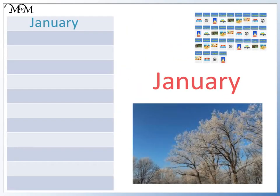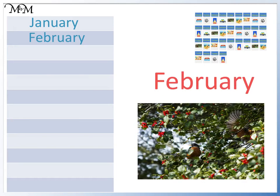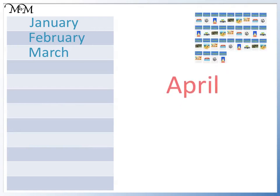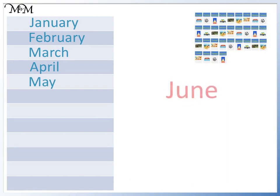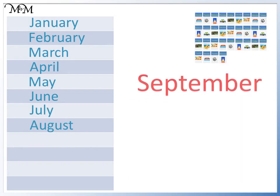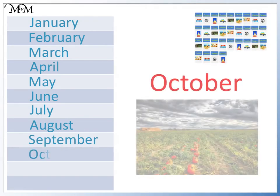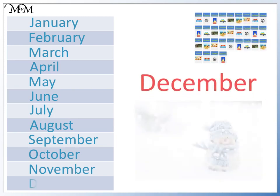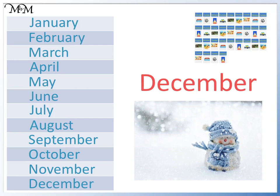Our first month is called January. After January is February. Then we have March, April, May, June, July, August, September, October, November, December. There are 12 months in total and they are always in this order.